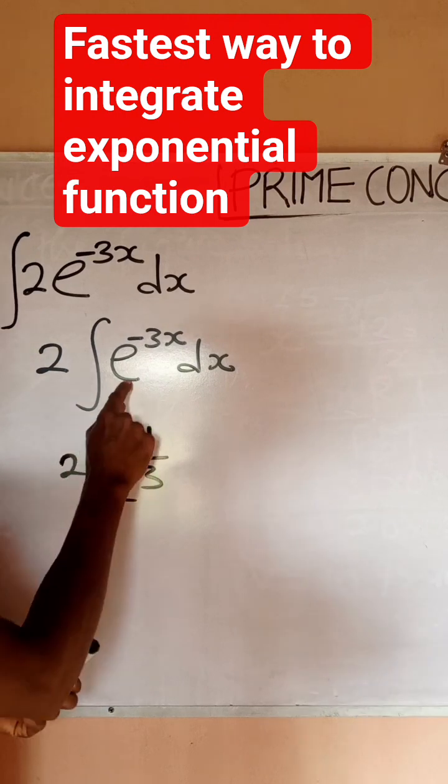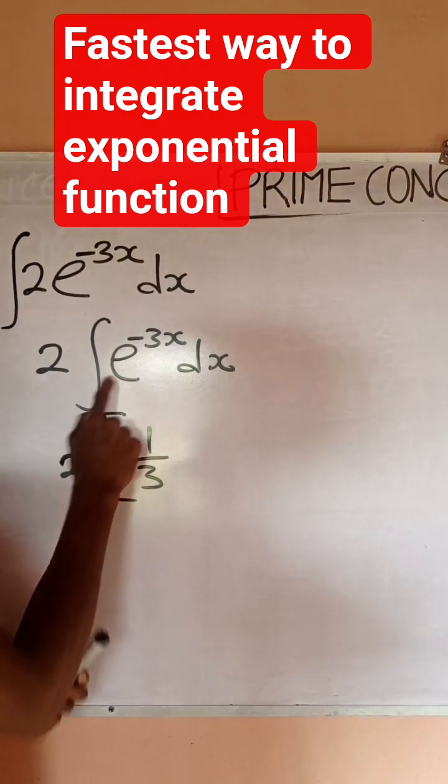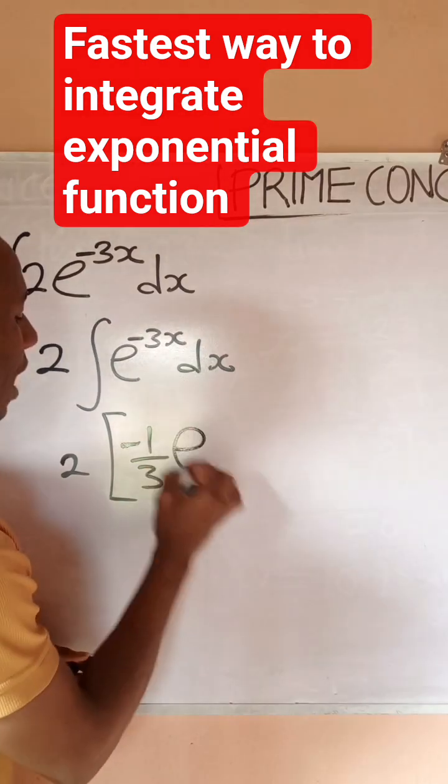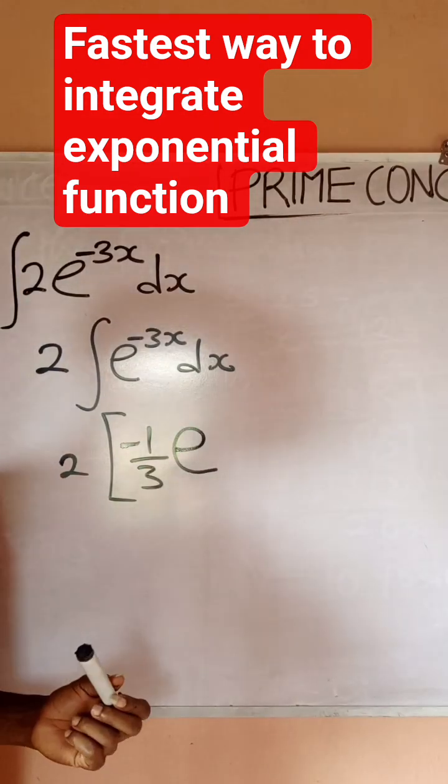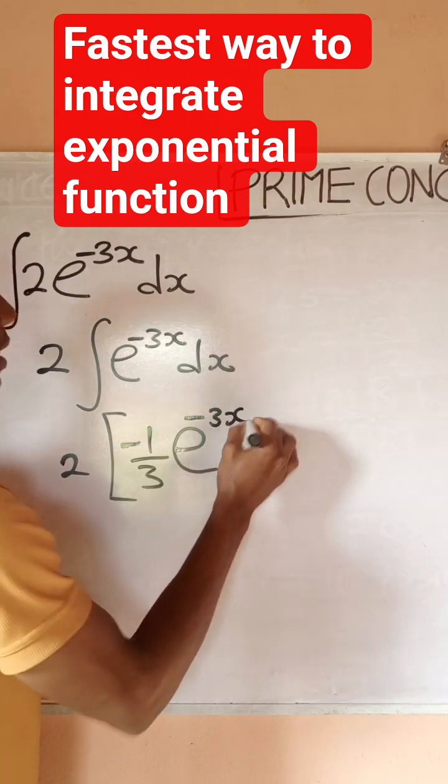Then the next thing I want to do is to integrate exponential, just exponential. So if I integrate exponential, what do I have? I would have exponential. Then I would rewrite the power. So I would write back minus 3x.